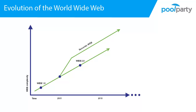The story takes us back to the year 2001, when the Semantic Web was first introduced. Originally, the Semantic Web was envisioned as an evolution of the Web, which provides a universal framework to describe and link data and not just documents, as we are used to on the World Wide Web.